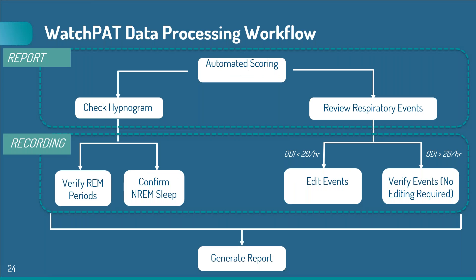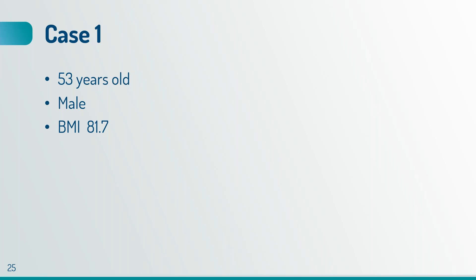In summary, we're looking very closely at the automated scored results — specifically the graphic display — generating our own impressions of the hypnogram and sleep disorder breathing severity. We use our visual impressions to cross-check the tabular data, confirm, verify, or do a deep dive with targeted insights as to which portions of the recording we might want to examine before we generate our final report. I'd like to illustrate this pattern with a graphic example of a 53-year-old man who is morbidly obese with a BMI of 81.7.